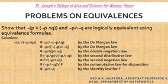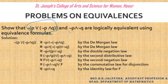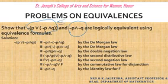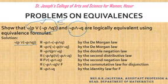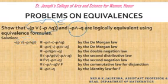Here in this question, they have asked us to prove that negation of (p ∧ (negation p ∧ q)) and negation of (p ∧ negation q) are both equivalent to each other. So first, here we are considering the left hand side value: negation of p ∧ (negation p ∧ q). In this, the outer bracket is the whole bracket and the inner one is the smallest bracket.